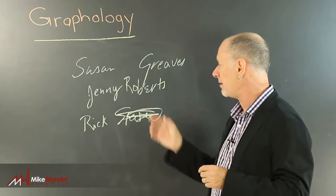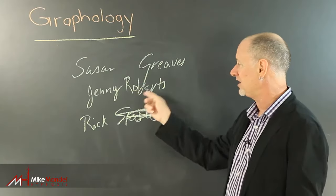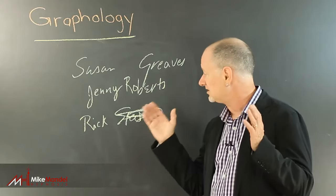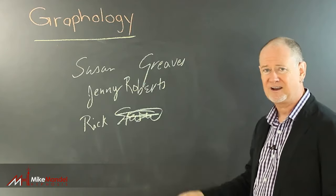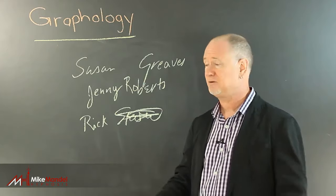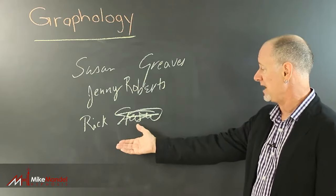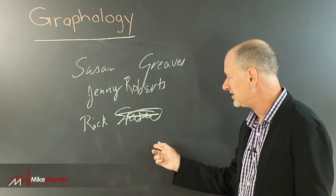Likewise, Jenny Roberts, if she's married, is feeling very nice and cozy with her husband. The signature is showing the two names very close together. But what about Rick Stevens here? Obviously, it's not a married name. It could be he could be a married man, he could be an unmarried man. But from this signature, what do we notice?